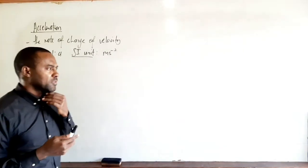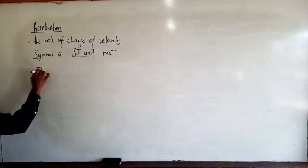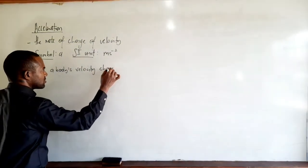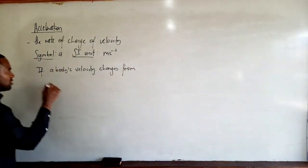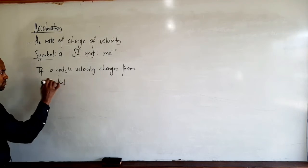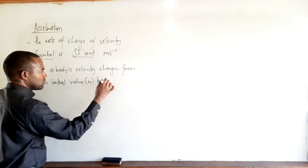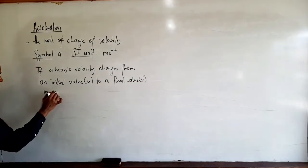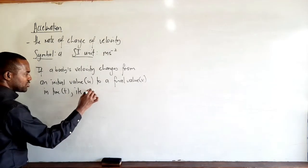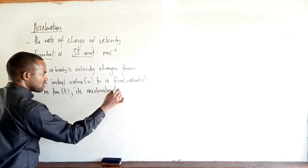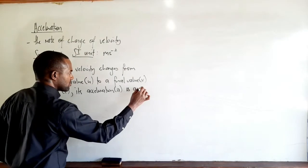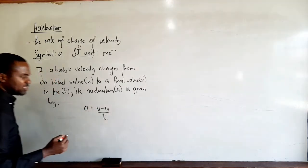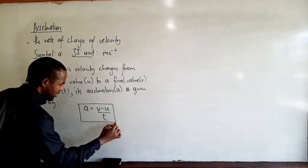If a body's velocity changes from an initial value u to a final value v in time t, its acceleration a is given by the formula: a equals v minus u over t. This is our formula for calculating acceleration.